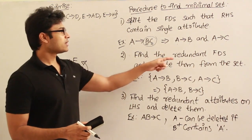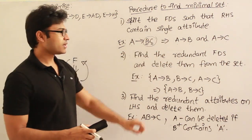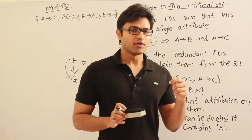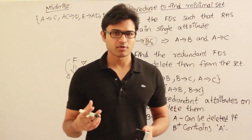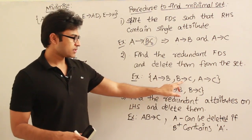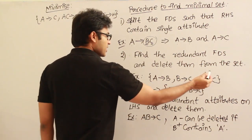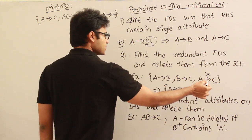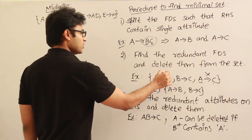The next step is to find the redundant FDs and delete them from the set. Once you split them, find the redundant FDs and delete them. When can you say an FD is redundant? You remove that FD and see if from the remaining FDs you are able to derive it. For example, if you have A determines B, B determines C, and A determines C — you can remove A determines C because you will be able to derive it even without it. Without this, if you try to find out A+, it contains A, B, and C.